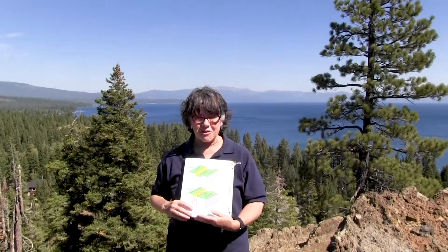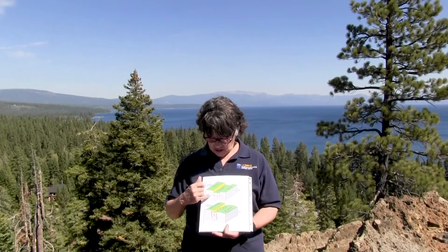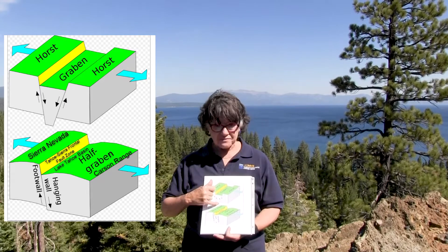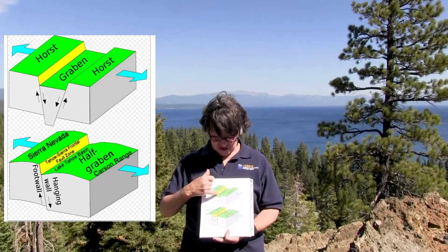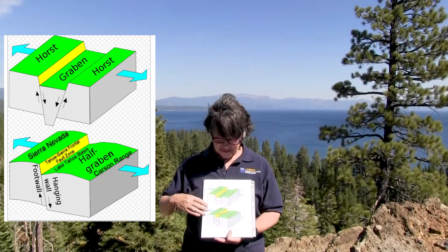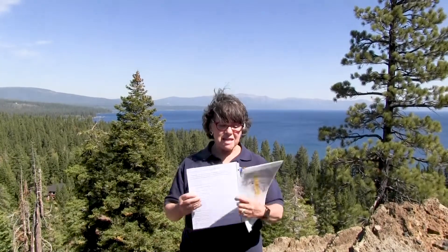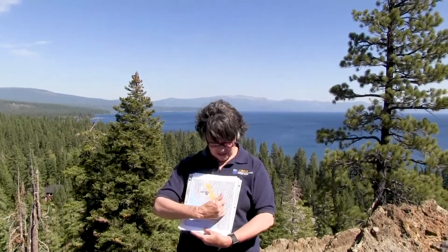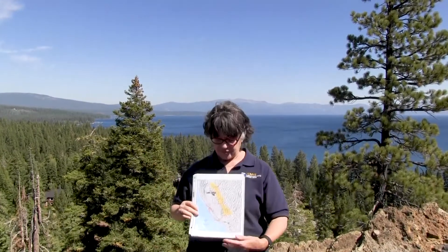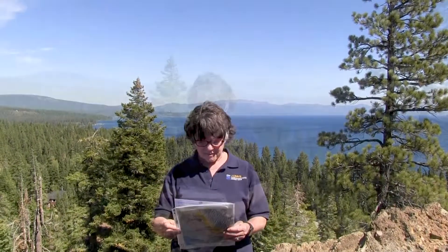As the earth's crust pulls apart, cracks or faults form and ranges rise and basins fall. Geologists call them horsts and grabens, but basically they're ranges and basins. In Nevada you can see that the whole state is pretty much covered by basins and ranges — if you've ever driven across it, you go up and down repeatedly. That's what the Basin and Range looks like.